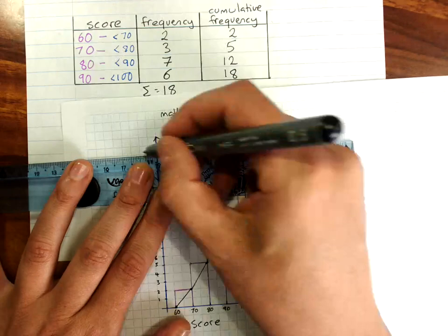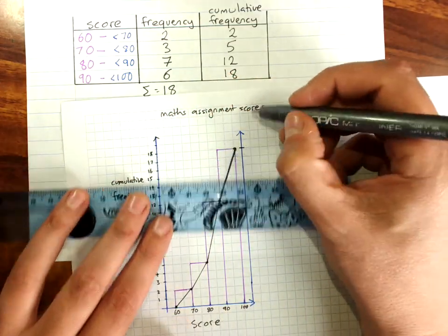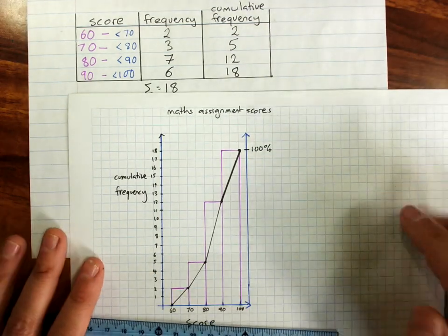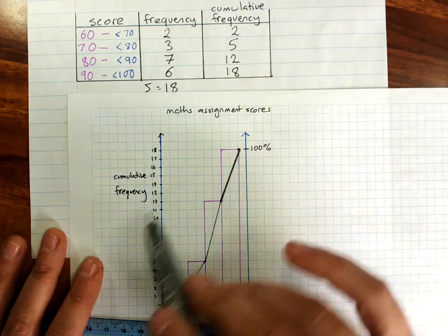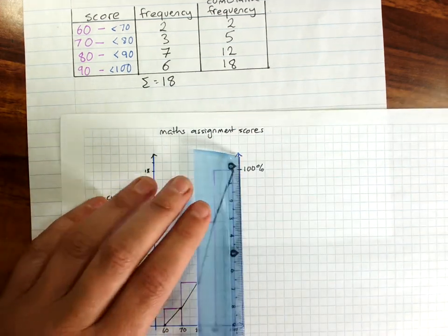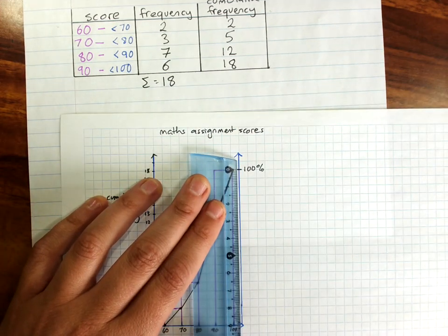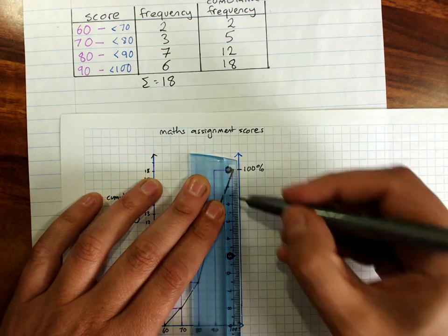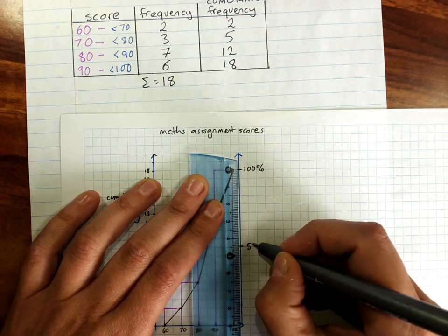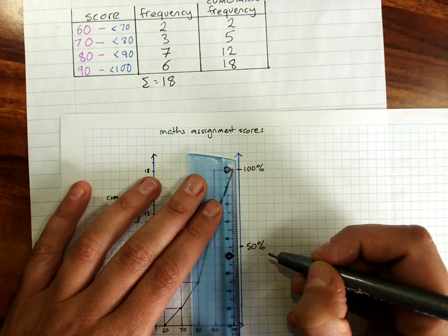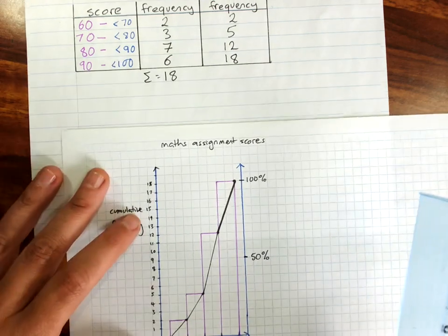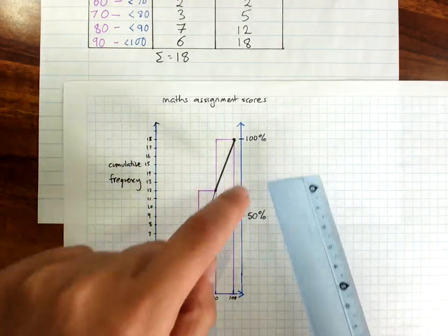We had 18 students in the class. That is 100%. Depending on the question, it will depend on which percentiles we want to show. I'll talk about the concept of a percentile shortly. 50% is always sensible. Now, you can just work out where that will be by measuring. I've got 9 centimeters showing here. So 4.5 centimeters will be the 50% point.